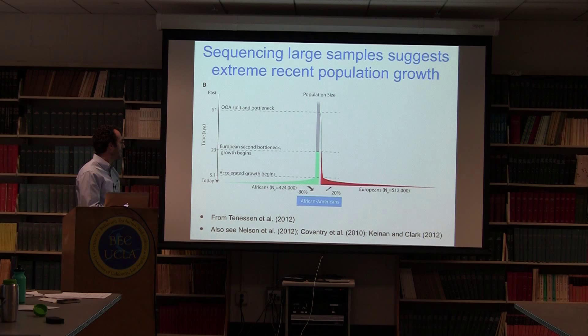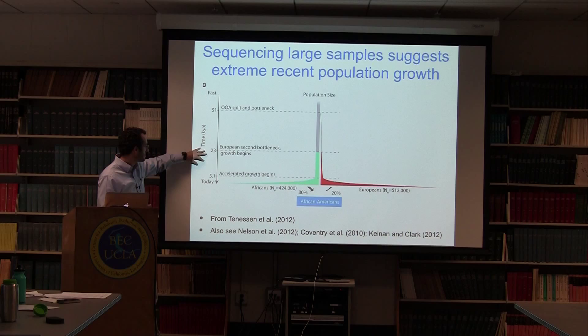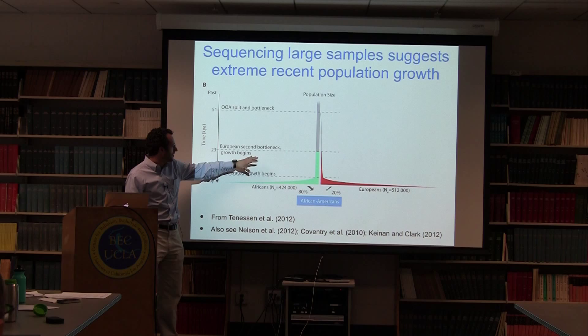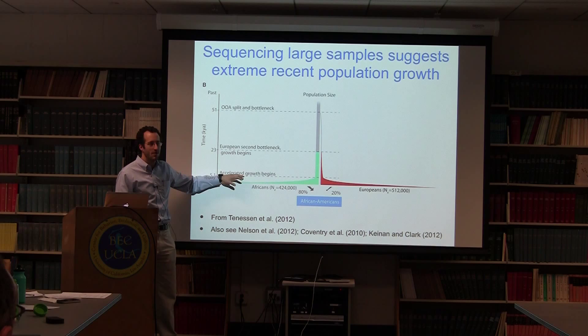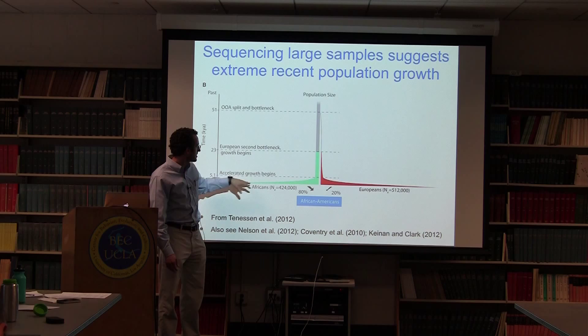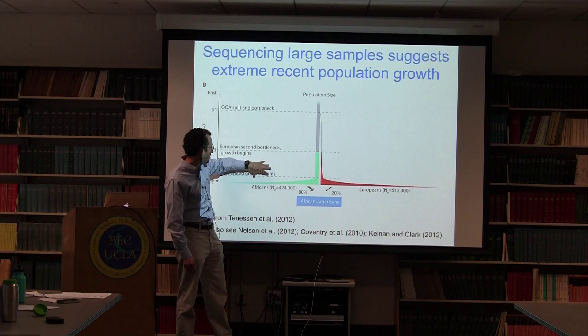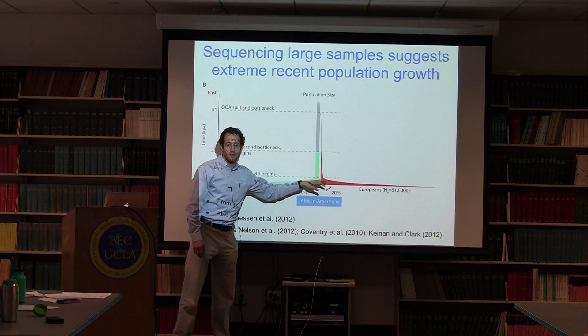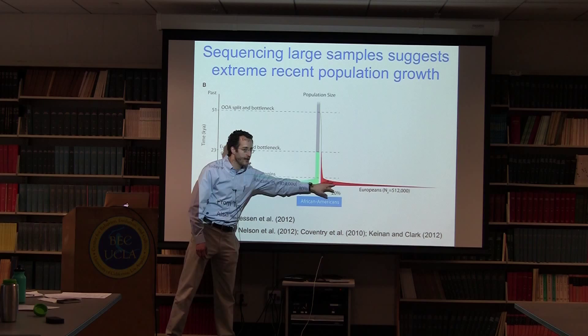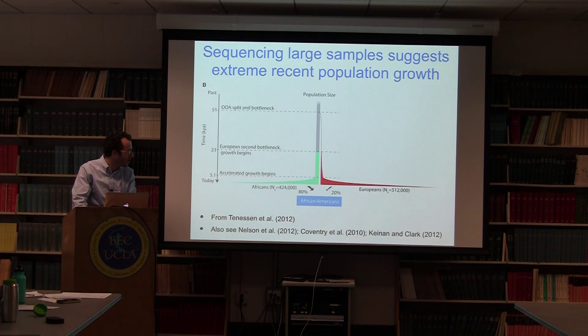This figure from a paper by Tennessen et al. shows that they looked at genetic variation data and fit a demographic model. The basic idea is they fit a model where, back in time, there was an out-of-Africa bottleneck — a separation between non-African and African populations — and then within the last 5,000 years the populations expanded dramatically, both the African and the European populations. Other studies came to qualitatively similar conclusions: there is evidence for recent population growth from genetic variation in these large sample sizes.